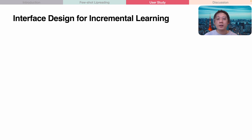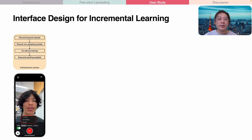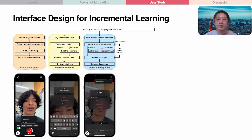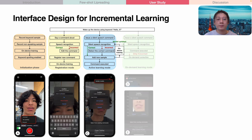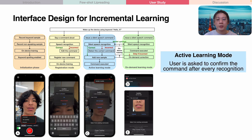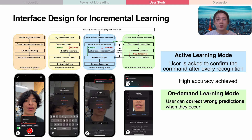To achieve improving performance, we propose an incremental learning scheme to gradually learn from newly available samples. To initiate the system, the user first records keyword and non-speaking samples to enable the keyword spotting function. In registration mode, the user speaks aloud to define a new command. In active learning mode, the system prompts to solicit confirmation for each recognition and uses that feedback to improve the model. Since the model uses a lightweight linear classifier, it can be updated on-device in no more than two seconds. In on-demand learning mode, the user can correct misrecognitions at any time, trading off performance and effort by switching between learning modes.